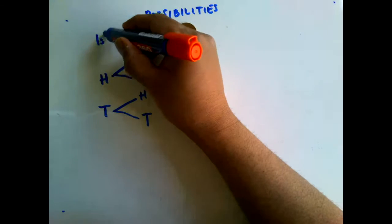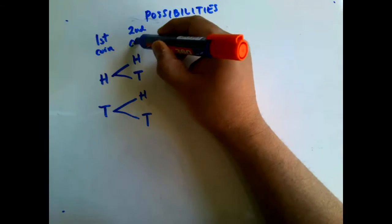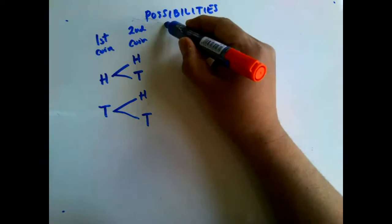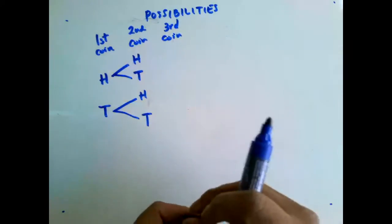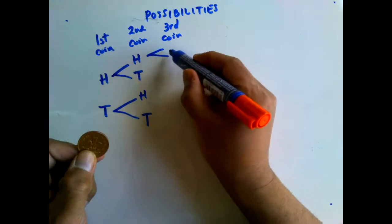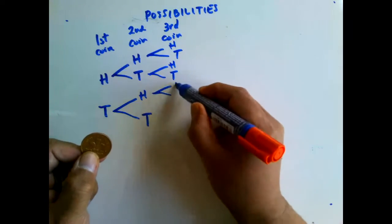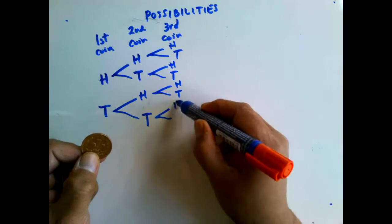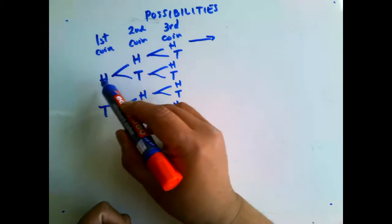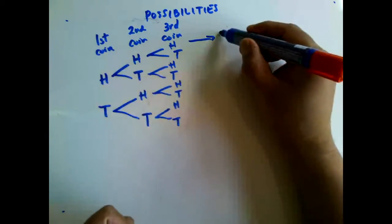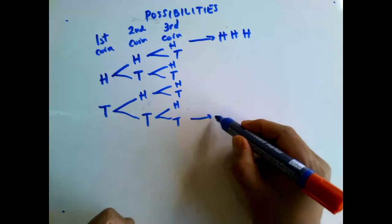Here we have the first coin, the second coin, and the third coin. The third coin can also be either heads or tails. So we can look at all the possibilities here — at the top it could be all heads, and at the bottom it could be all tails.